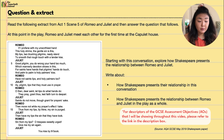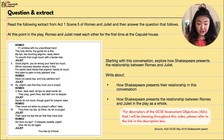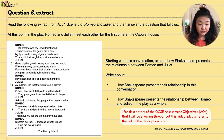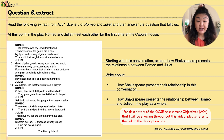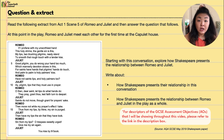Starting with this conversation, the question asks us to explore how Shakespeare presents the relationship between Romeo and Juliet. It's very broad — we're asked to write about the nature of the relationship in this conversation and how Shakespeare presents their relationship in the play as a whole.